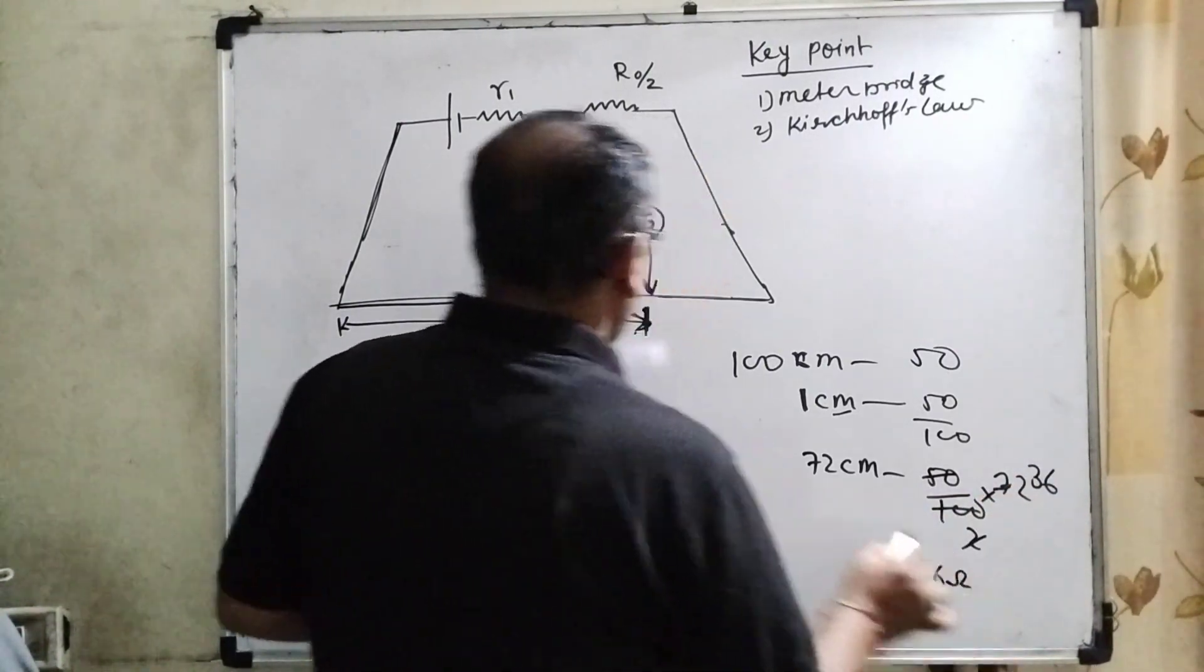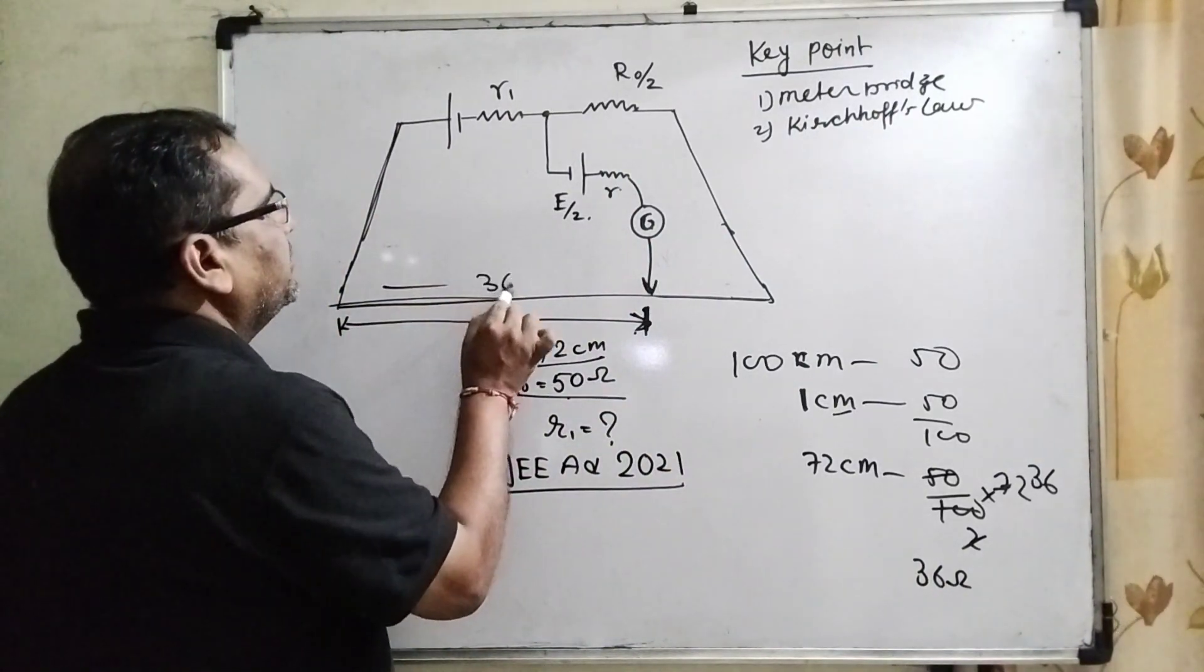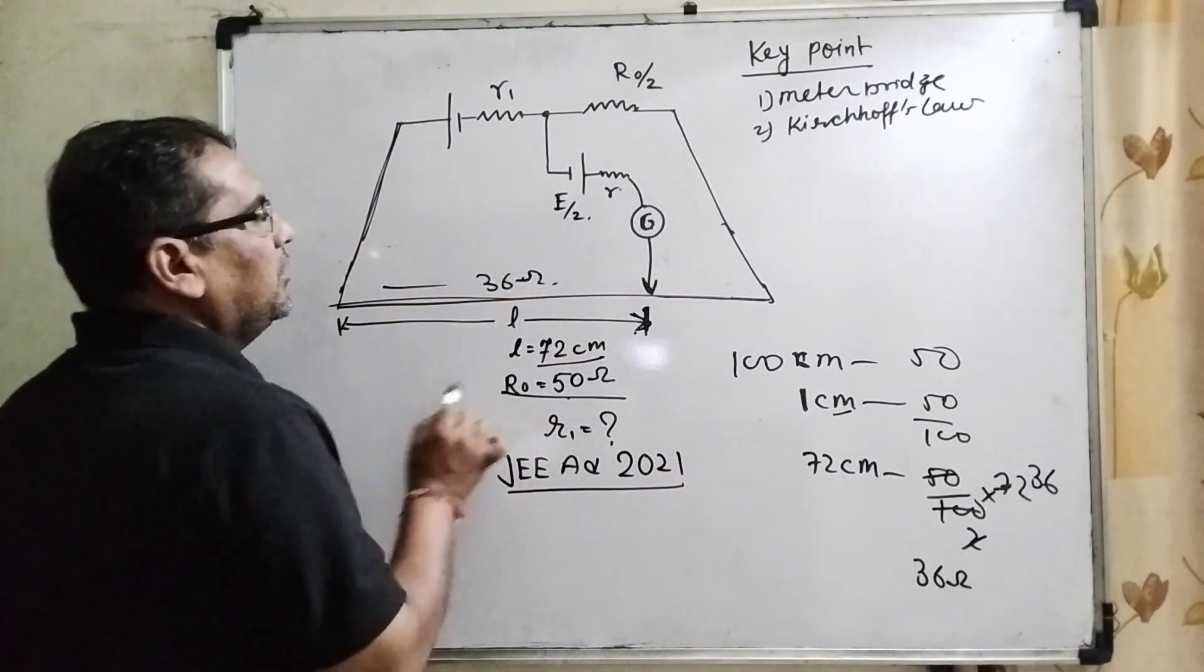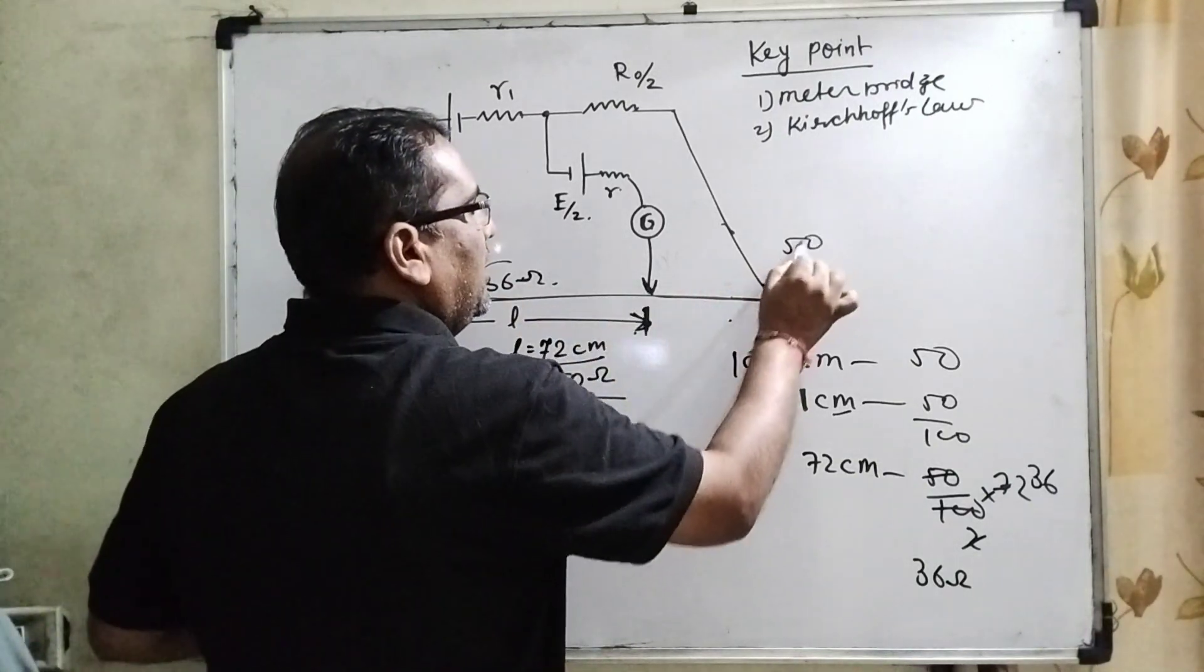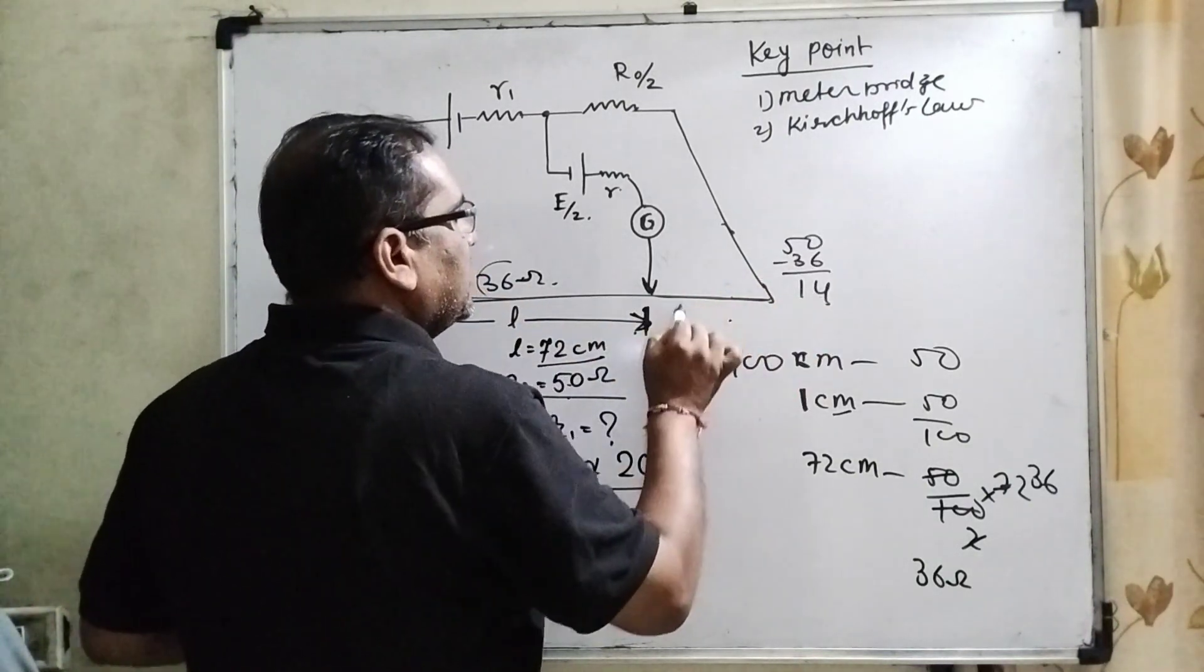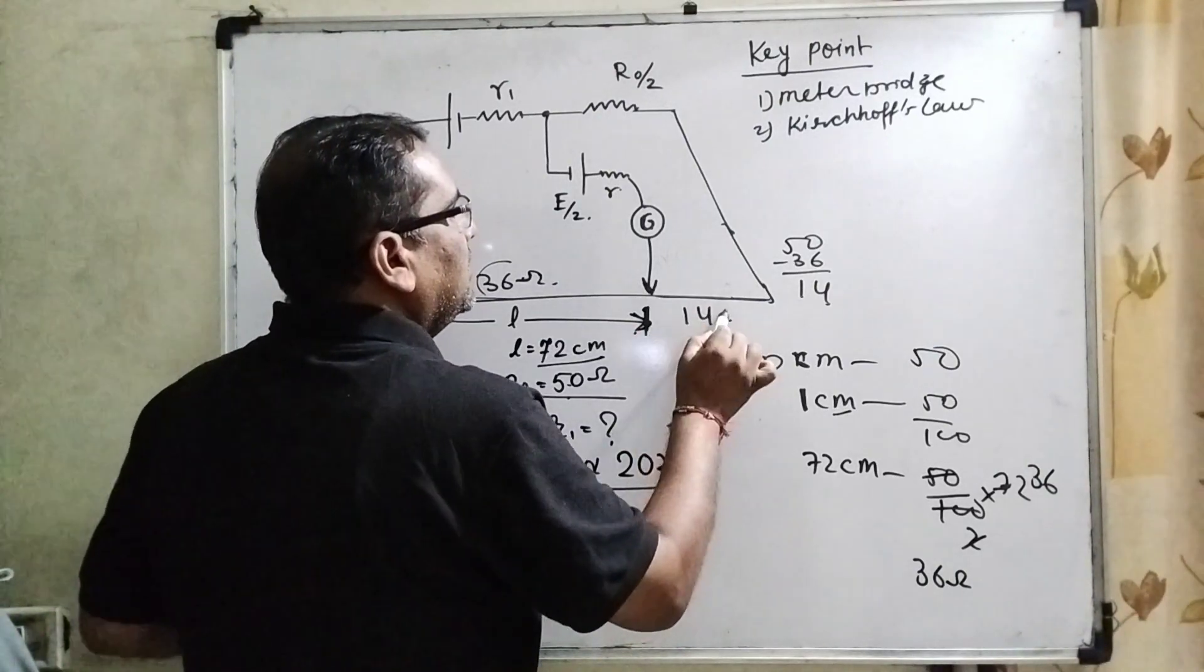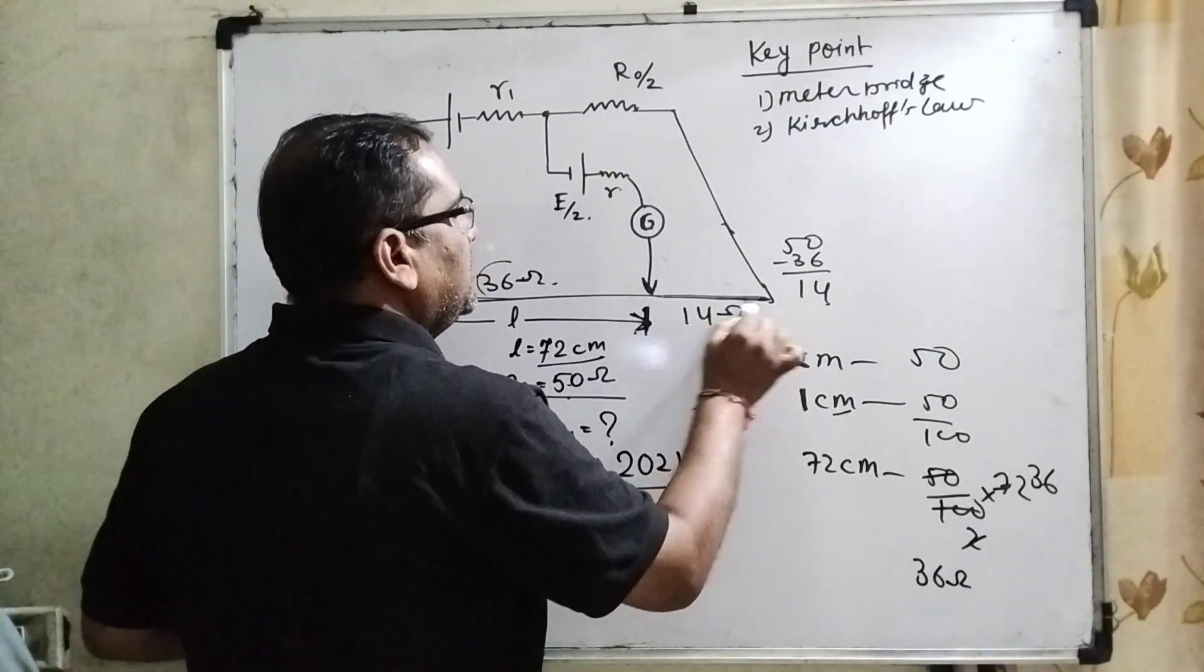So here we have 36 ohm resistance. The remaining resistance is 50 minus 36, which equals 14 ohms.